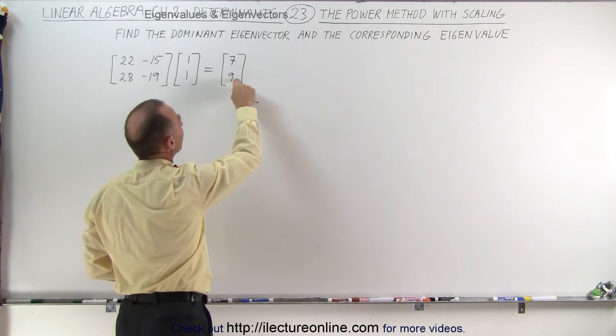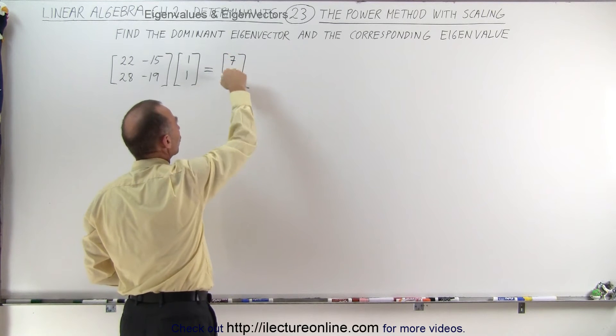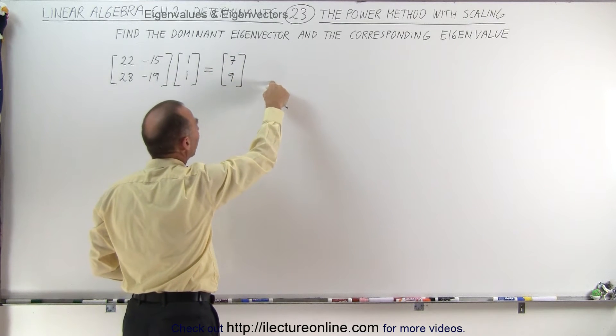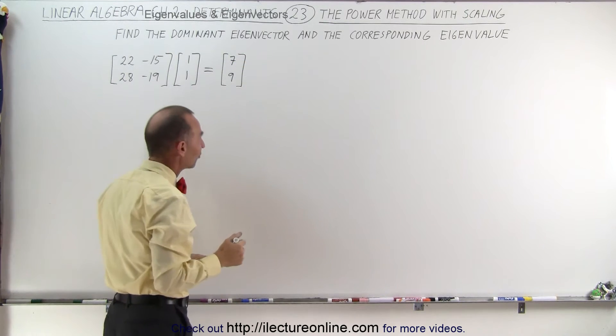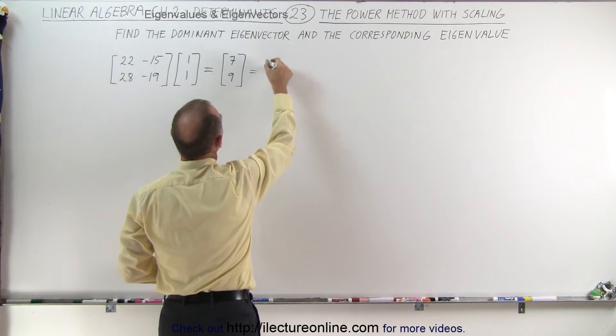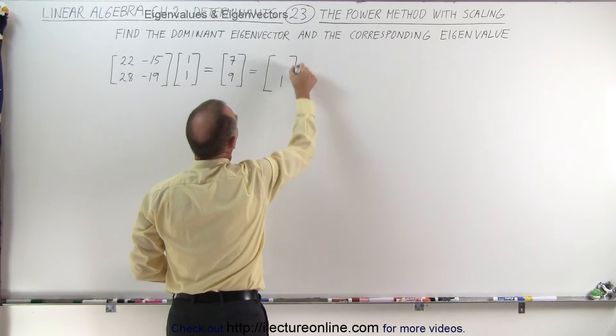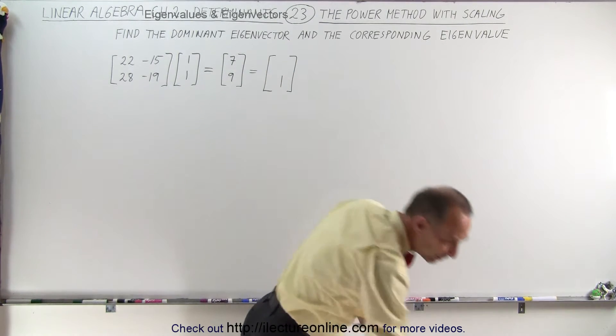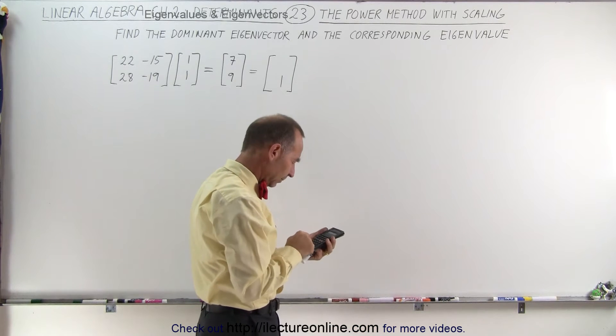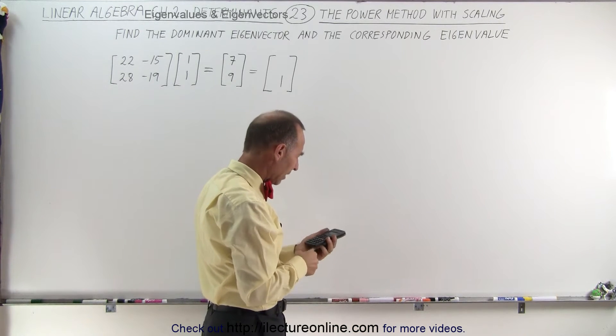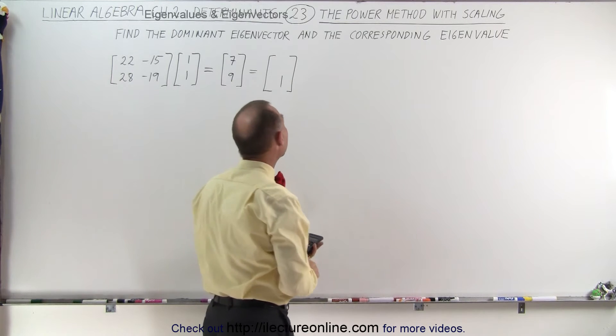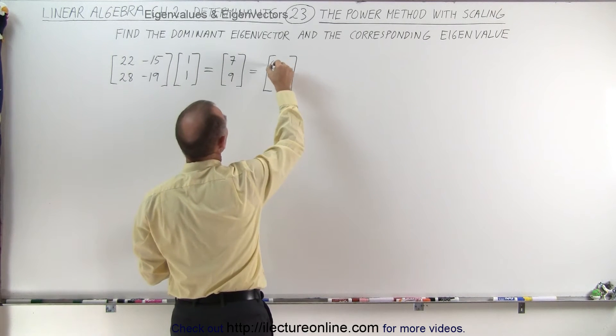We're going to scale this one down to 1. We're going to take the largest of the two numbers and make it 1 and then find the corresponding value for 7. This can then be written as 1 and if we divide 7 by 9 we get 0.78. We're just going to keep two decimal places.